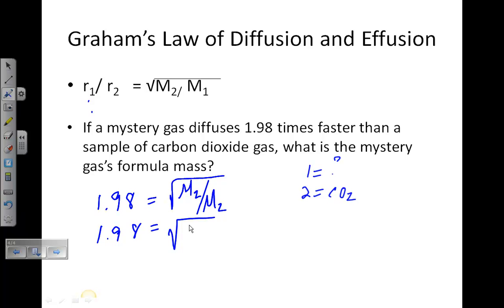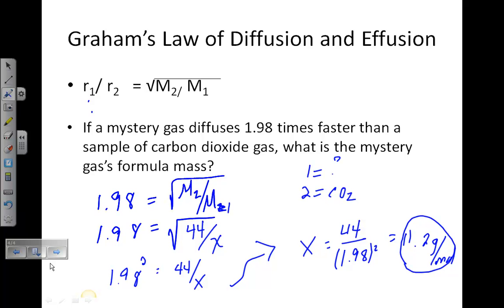You would have carbon dioxide's molar mass, 44 grams per mole, divided by the mystery, which we'll call X. Square both sides. You'd have 1.98 squared equals 44 over X. Solving for X, 44 divided by 1.98 quantity squared works out to roughly 11.2 grams per mole. That's your answer. That's it for today.